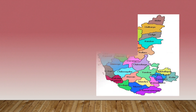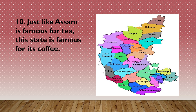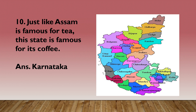Now, see this. You are not able to recognize which state it is? So let me give you a clue — just like Assam is famous for tea, this state is famous for its coffee. Do you know which state it is? It is Karnataka. The capital of Karnataka is Bangalore, and it is the largest state in South India. The language spoken is Kannada, Tulu, and Kodava. The state animal is elephant, state bird is Indian Roller, state flower is Lotus, and state tree is Sandal — what we also call Chandan.